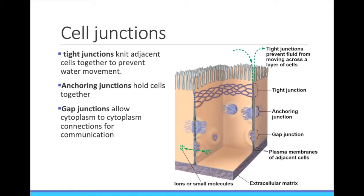Anchoring junctions hold two cells together so they cannot be separated. This is really important in muscle cells. When muscles contract, the cells change shape, and the anchors help keep the tissues from tearing apart.